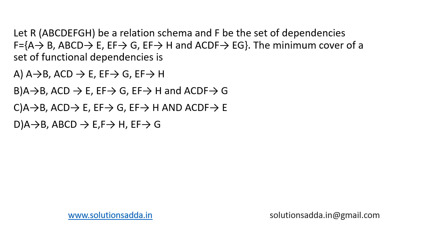This is a question from databases. Let R be a relational schema having attributes A, B, C, D, F, G, H, and F be the set of dependencies. F is equal to: A determines B; ABCD determines E; EF determines G; EF determines H; and ACDF determines EG. The question asks for the minimum cover of this set of functional dependencies.